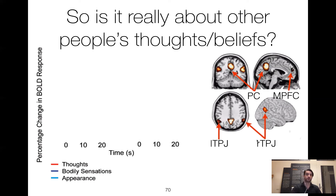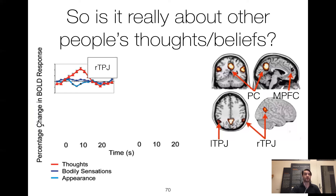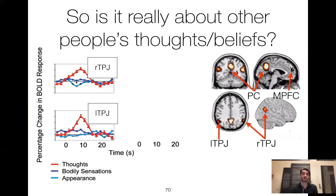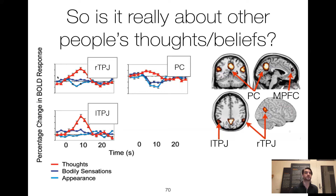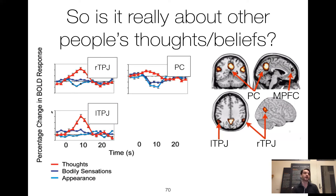We're going to look at activity in all four brain regions. In a region like the RTPJ, it's much more activated by the thoughts condition than by the bodily sensations or appearance condition. This is also true in the LTPJ and the precuneus. Notice there is a little bit of separation between bodily sensations and appearance — because if someone hasn't eaten and they're starving, you can infer they're grumpy, in a bad mood. So bodily sensations are a little bit higher than appearance, but not as high as when you hear explicitly about someone's thought process.